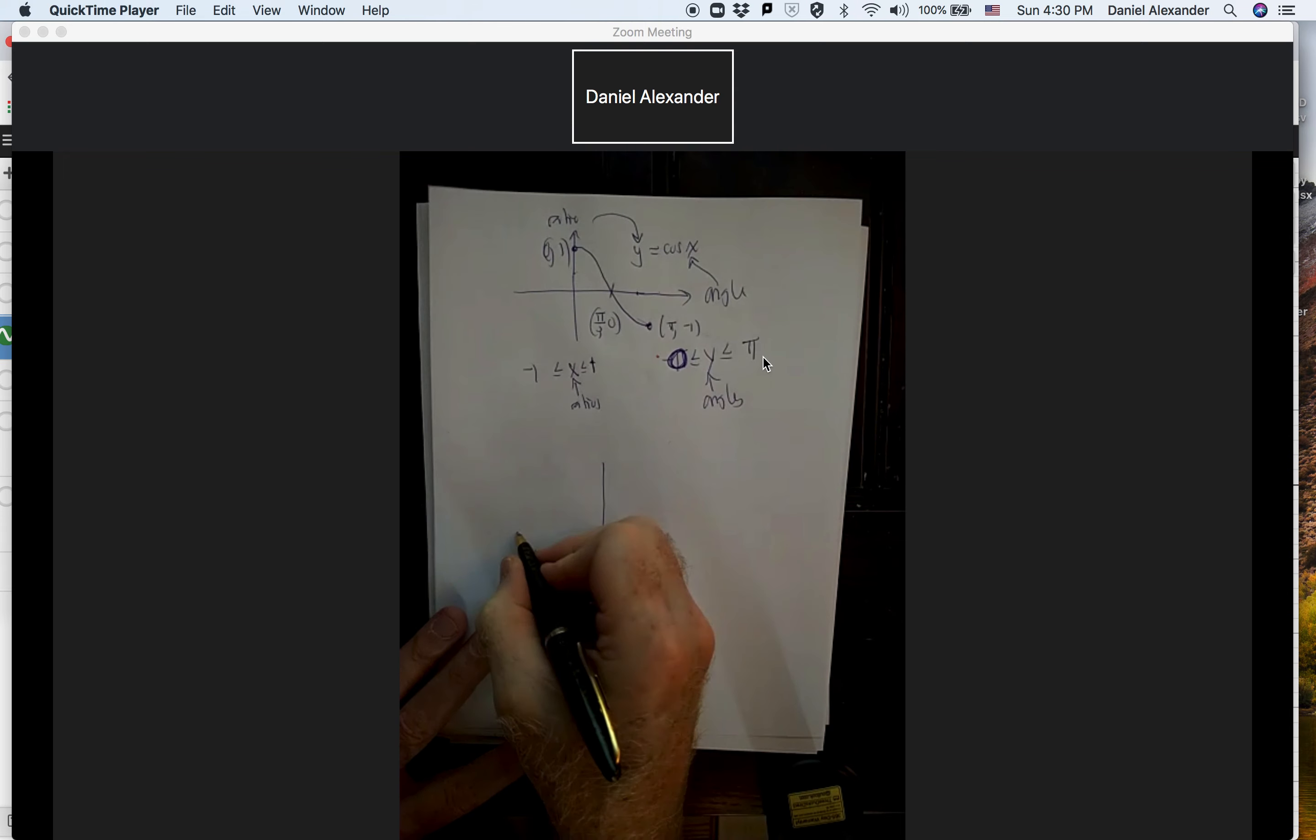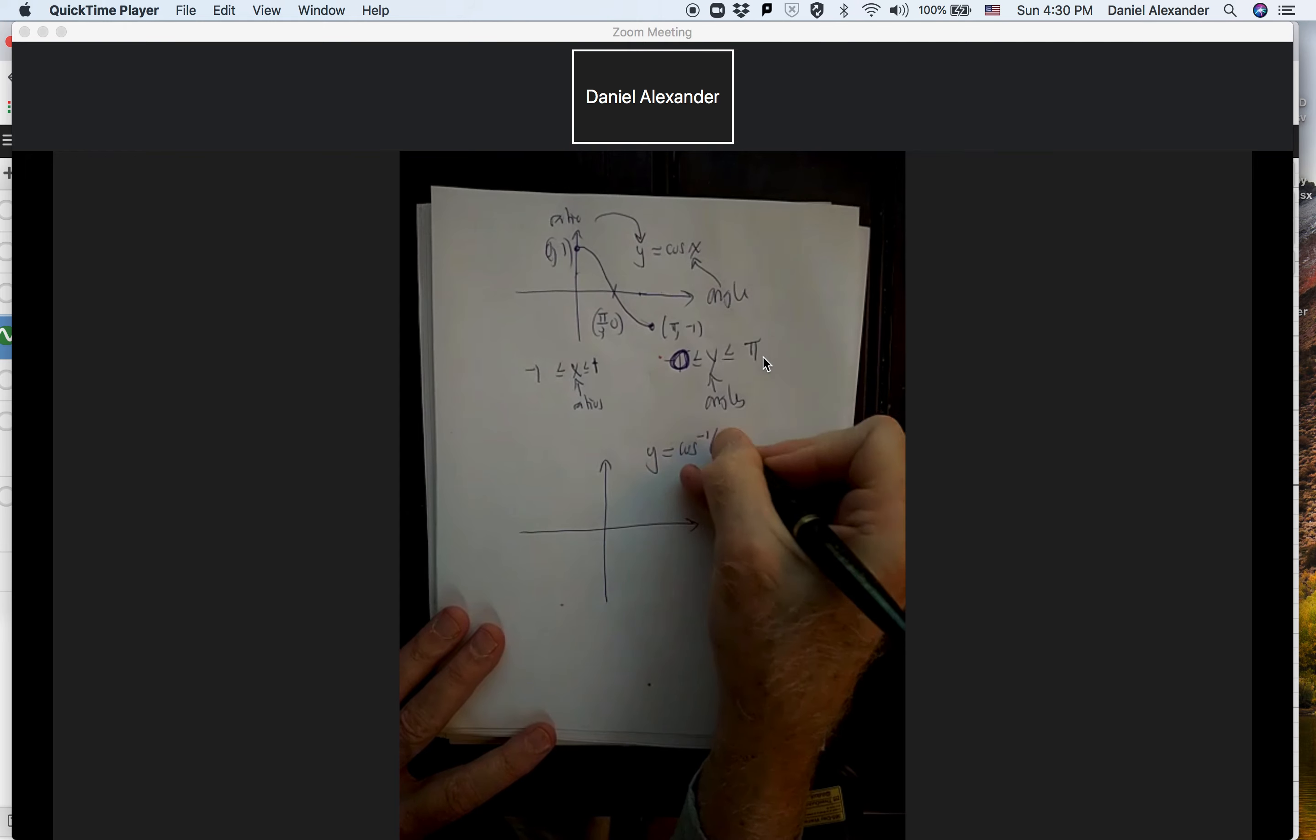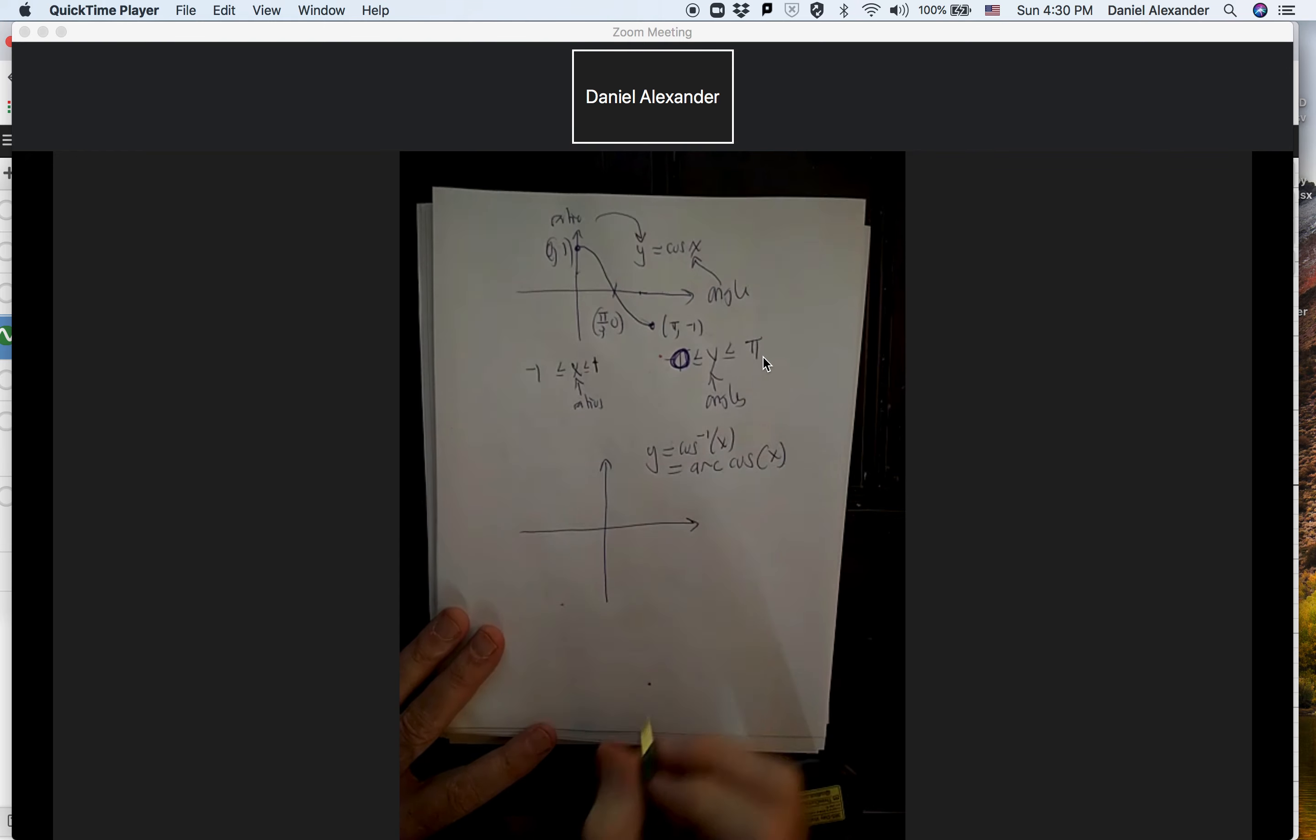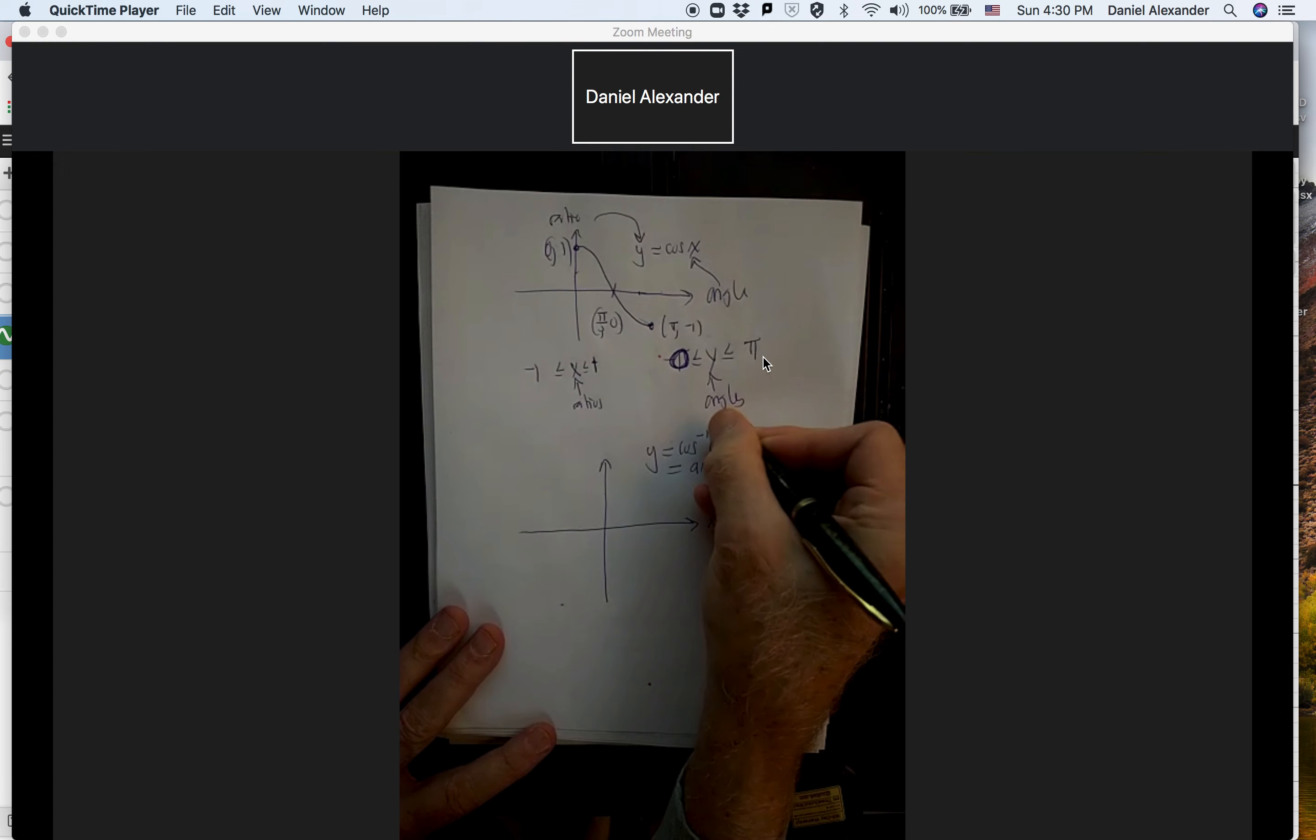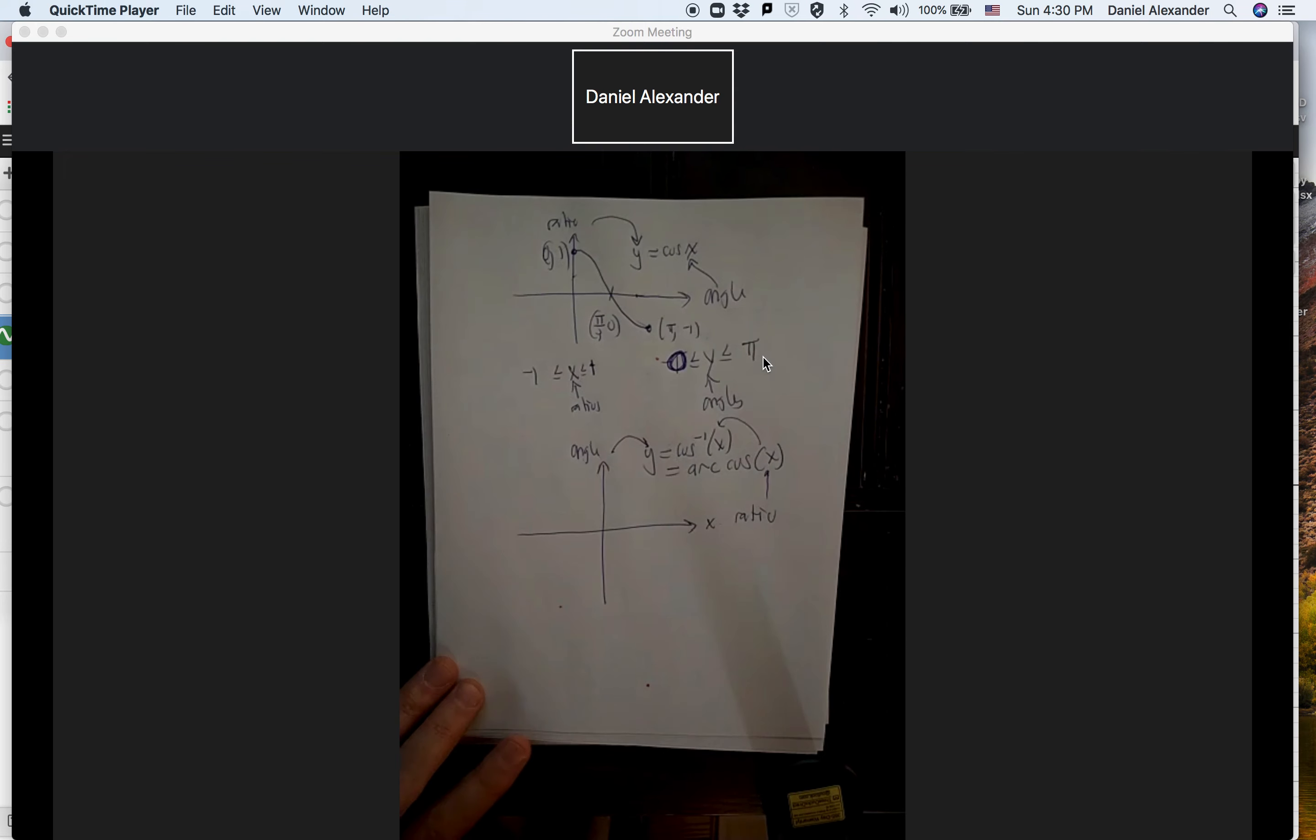So let's get a sense of what the cosine inverse is going to look like. And I'm going to ask you to draw this in a second. This is also sometimes called the arc cosine. So this is going to be, our x-axis here is going to be a ratio. That's what we're going to plug in. And we're going to get back the angle.